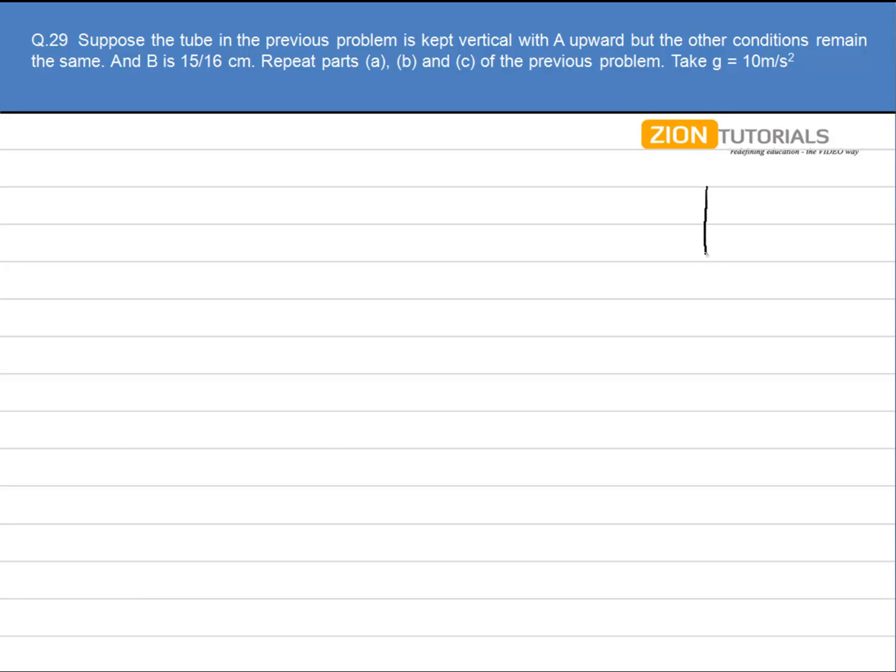Now in this case I have a tube like this. This is my A. This is my B.